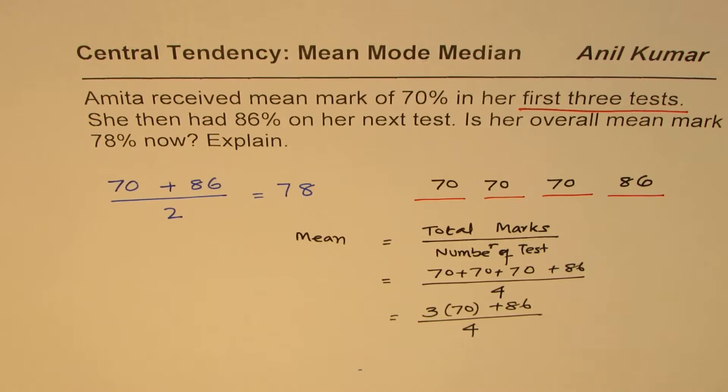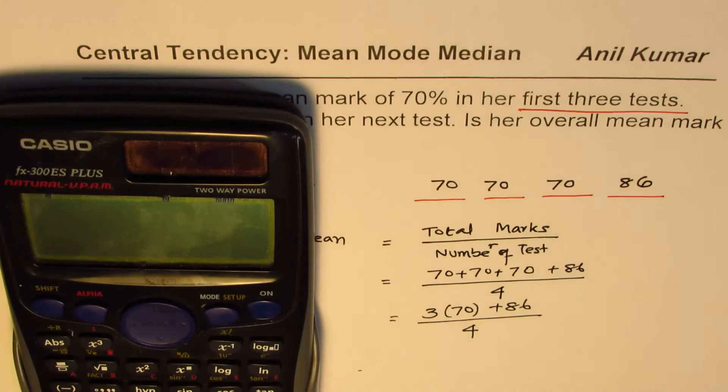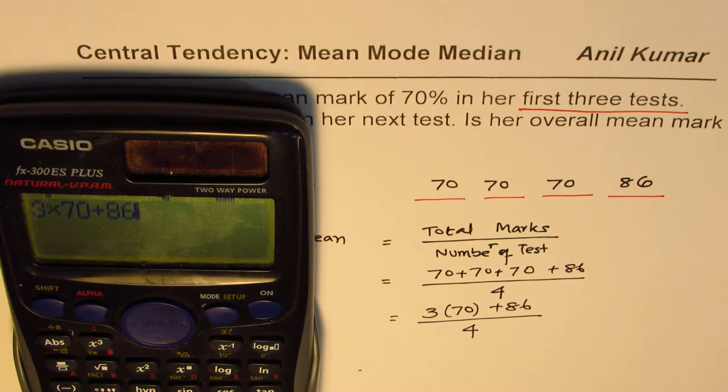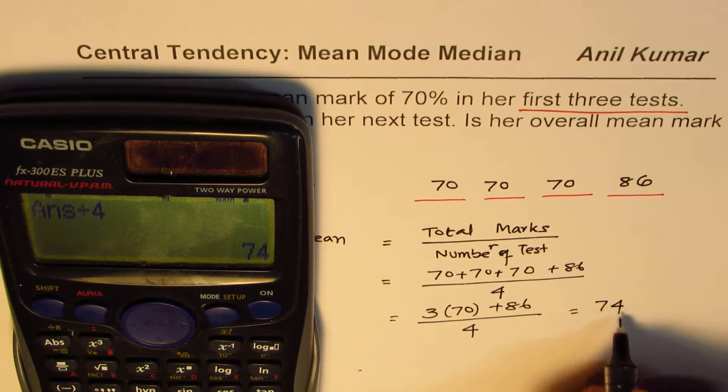So that is the actual mean: 3 times 70 plus 86 divided by 4. That is the actual mean - it is only 74. Do you see that?